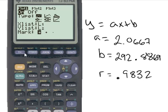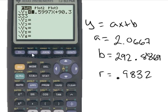And now, go into Y equals. Clear that out. Now I'm going to type in the equation I just came up with. 2.0667X. You can always hit this variable button for your variable. Plus 292.8869.